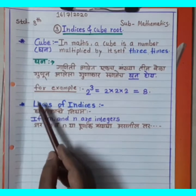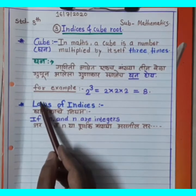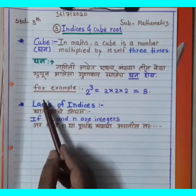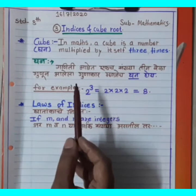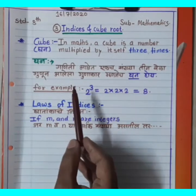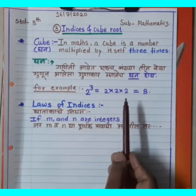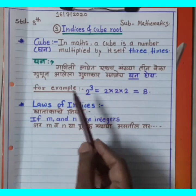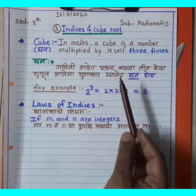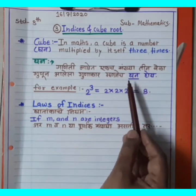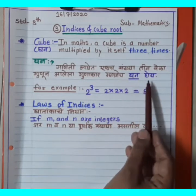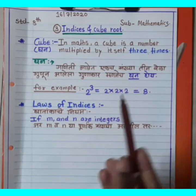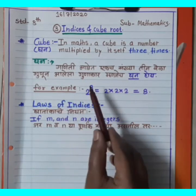So what is QB (cube)? When a number is multiplied by itself three times, that resulting product is called its cube (ghanav). For example...